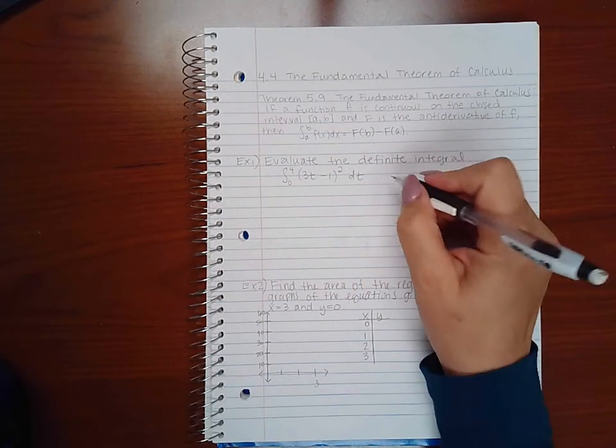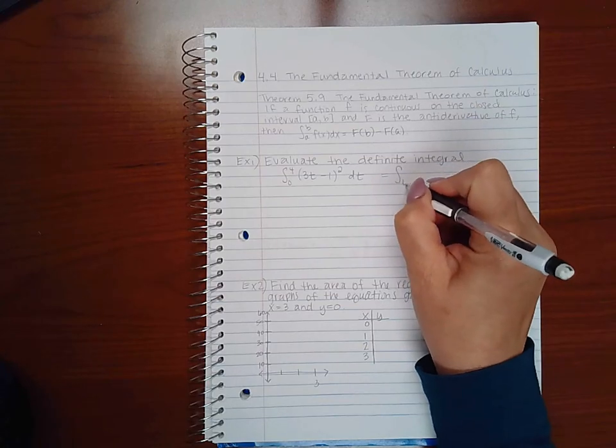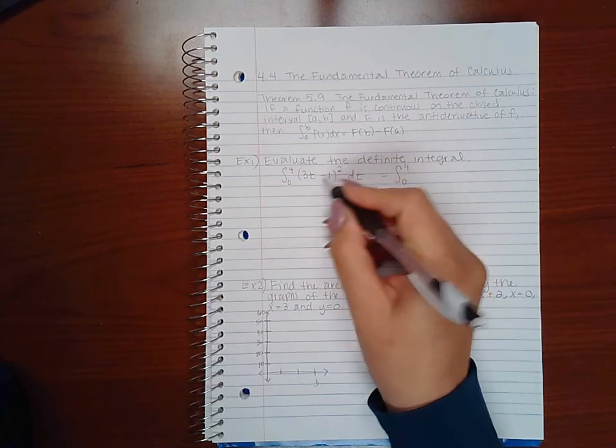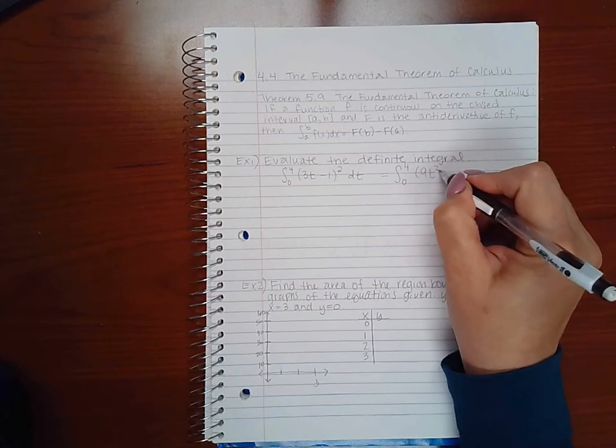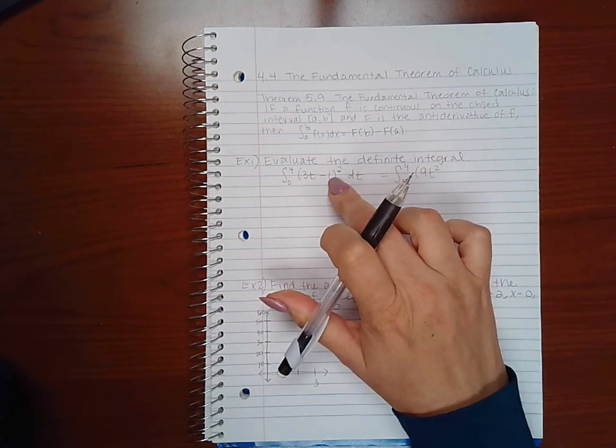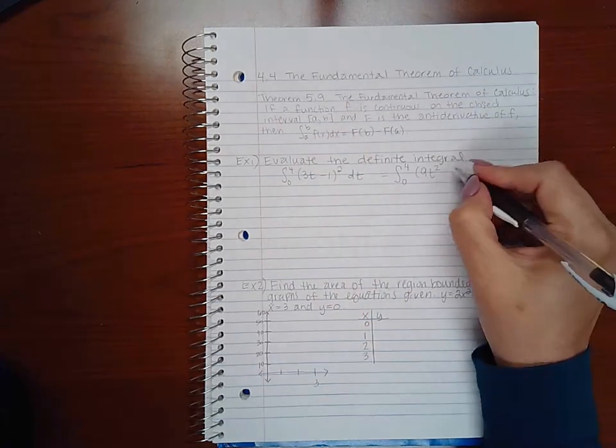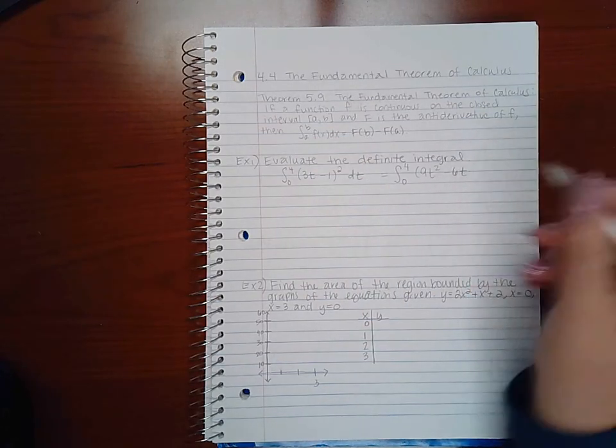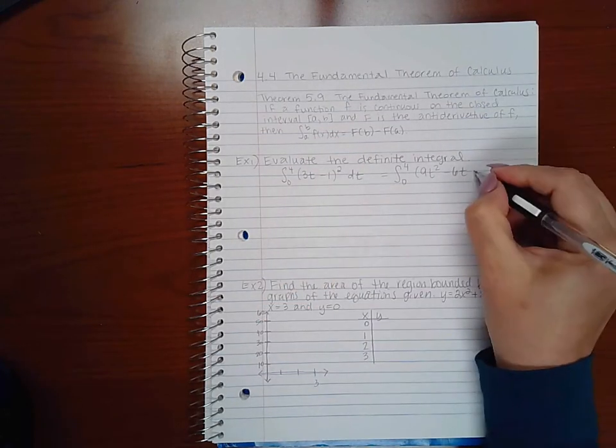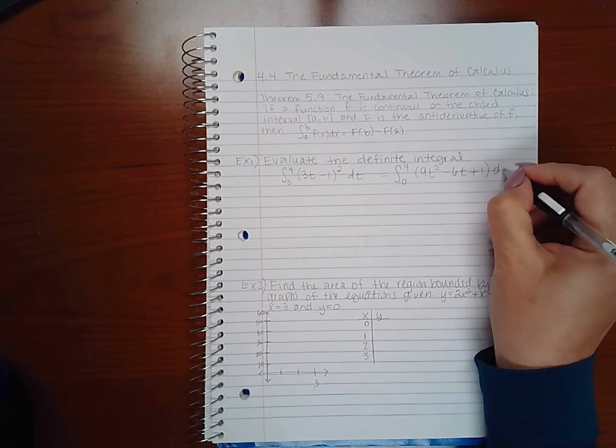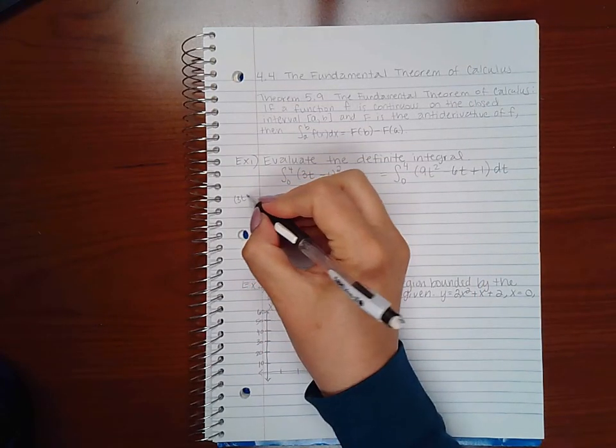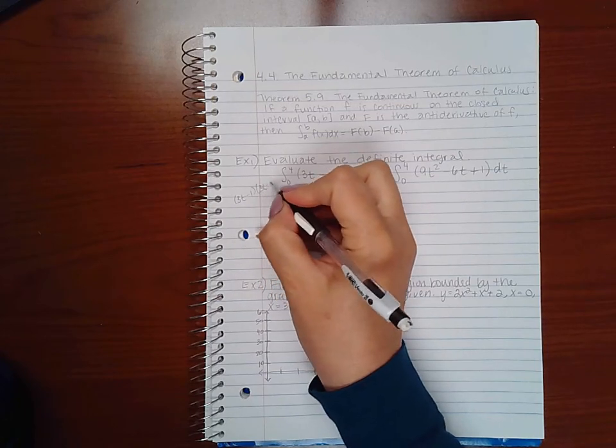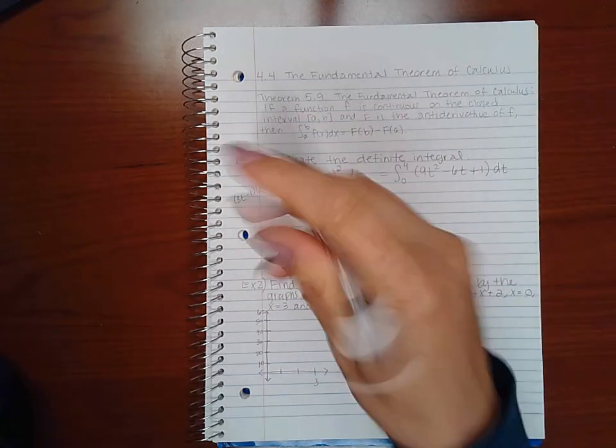Here if I take this, I want to simplify this so I can apply my rules. So I am going to square this. 3t times 3t is 9t squared. 3t times negative 1 is negative 3t, and another negative 3t makes negative 6t. And the negative 1 times negative 1 is positive 1. So all I am doing is 3t minus 1 times itself, and then simplifying it.